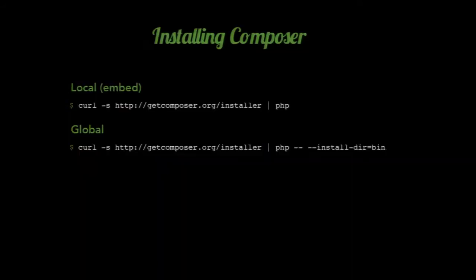Installing Composer — pretty simple. You can do it locally or globally. I usually have a global version on my computer because I'm using it for a whole bunch of different projects. But if you're developing a library and people are going to be contributing to it, putting it into your repository using the local method means you don't have to worry about your server having the executable. If you're going to do it globally, you just need to add install-dir and put it in your bin directory. Always good to keep those up to date as well — you can make a little symbolic link to 'composer' so you have to write a little bit less.